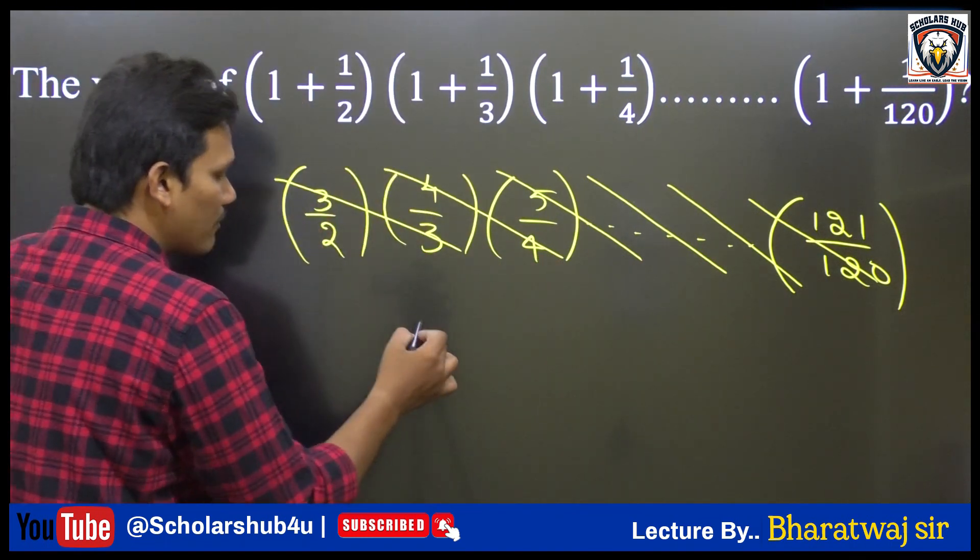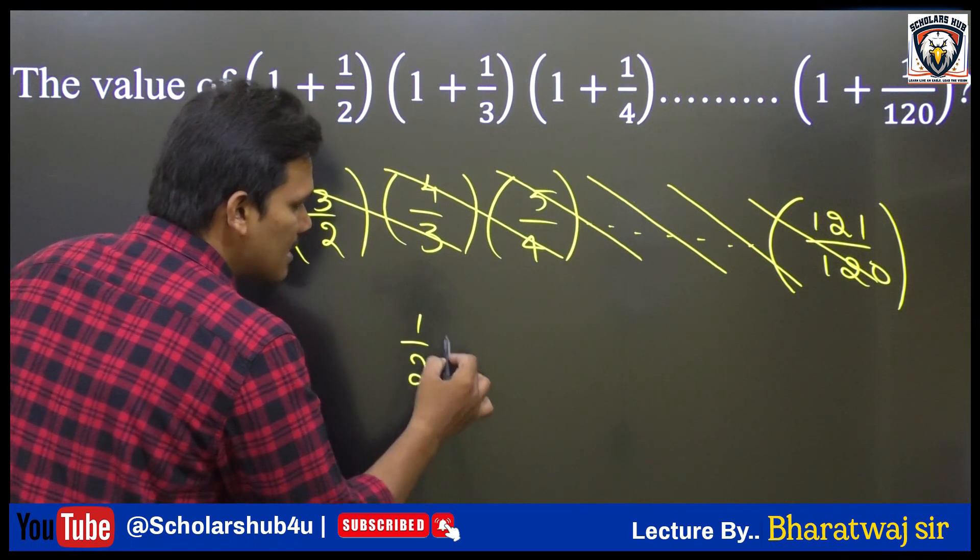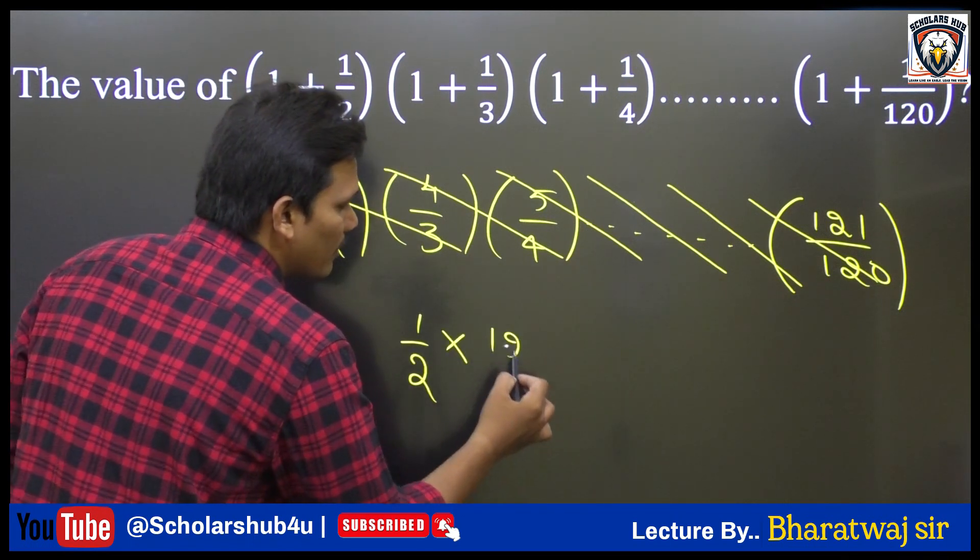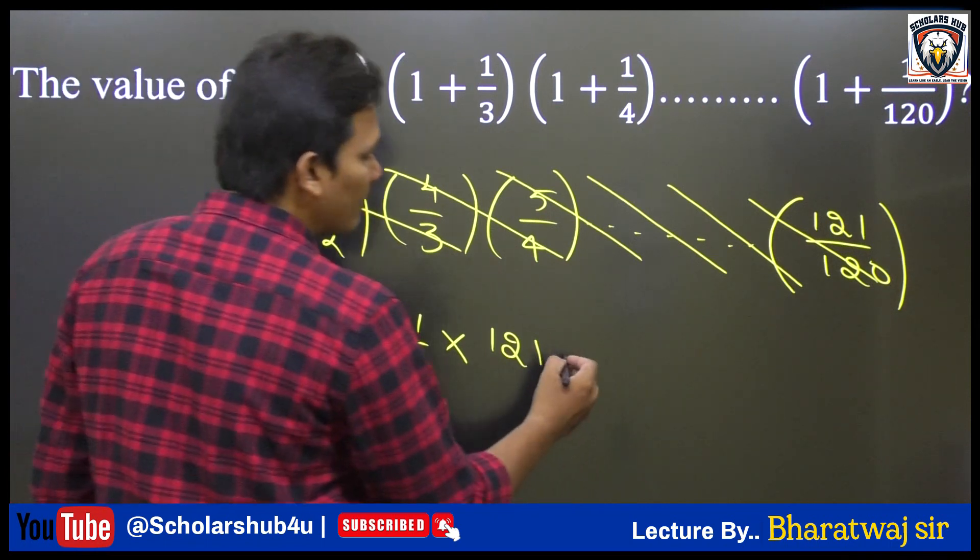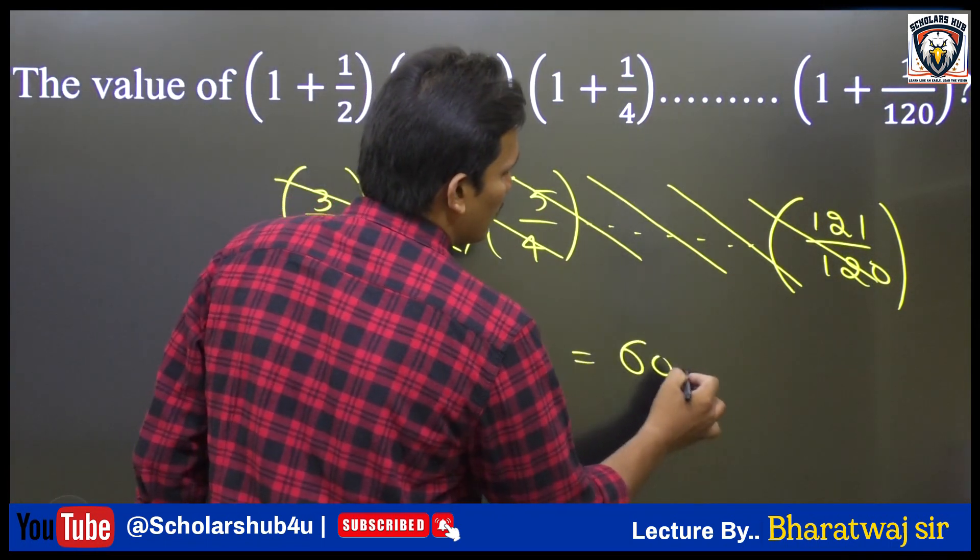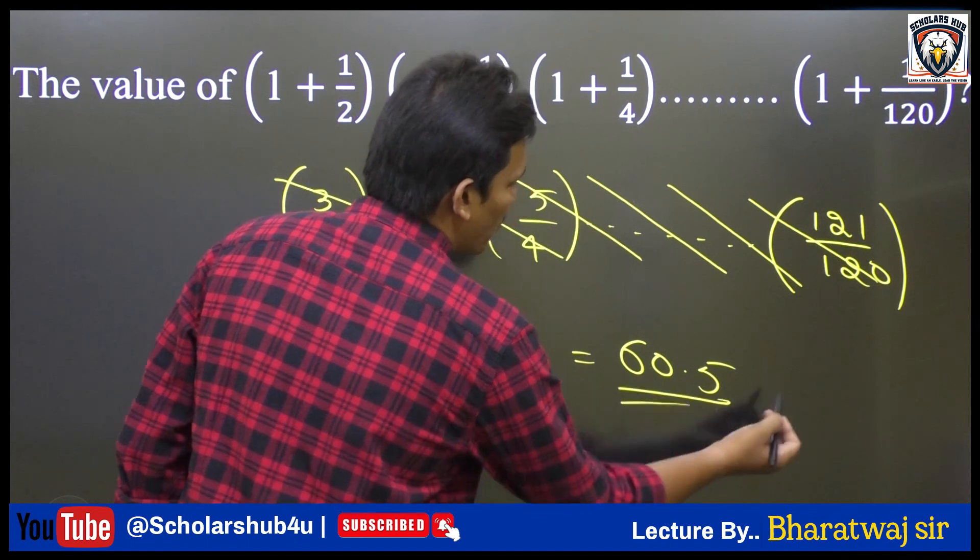So in the first term, I left with 1 by 2. In the last term, I left with 121. So just you need to solve this 121 by 2 value. So that value equals 60.5. So at last you are going to get 60.5.